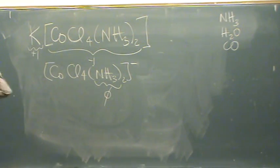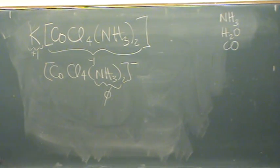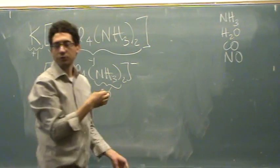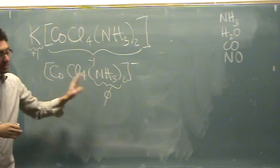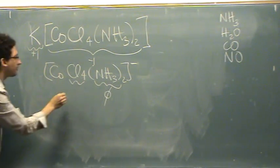Another one—nitrogen monoxide, that's also neutral. So remember the neutral ones. In this case, ammonia is neutral, so it contributes no charge. What's the charge on chlorine? Minus one.